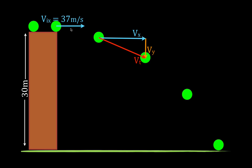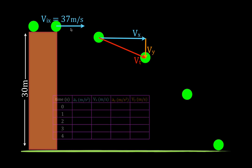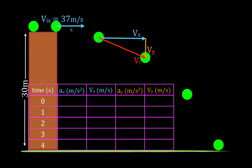In order to understand and look at the velocity and the motion in the x and the y direction, we're going to fill out this table. This table has the time points: zero seconds, one, two, three, and four seconds. We are going to look at the acceleration and the velocity in the x direction, and then the acceleration and the velocity in the y direction.